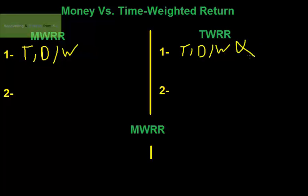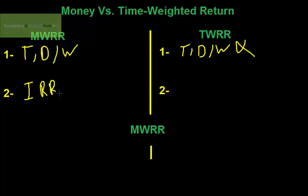The second difference: money weighted rate of return is computed using the internal rate of return (IRR), while in contrast, the time weighted rate of return is computed using the geometric mean. As a portfolio manager, you may measure the rate of return in different ways for the account under your management.